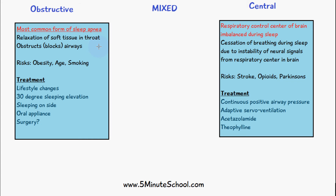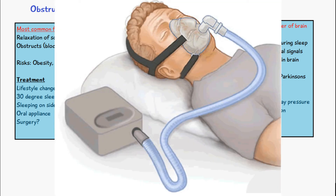When they wake up from a central sleep apnea episode, they just have a period of fast breathing and then it returns to normal. The risk factors associated with central sleep apnea include brain injury such as from a stroke or trauma, opioid medication, and Parkinson's disease. Treatment includes continuous positive airway pressure, the same mask used for obstructive sleep apnea.